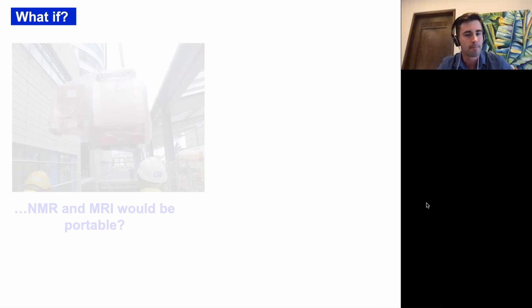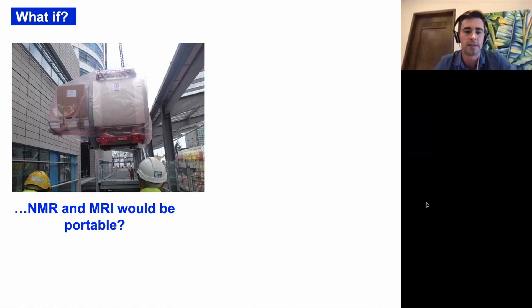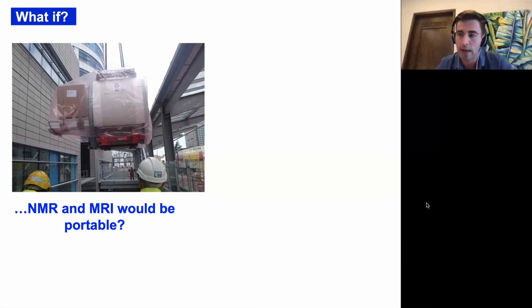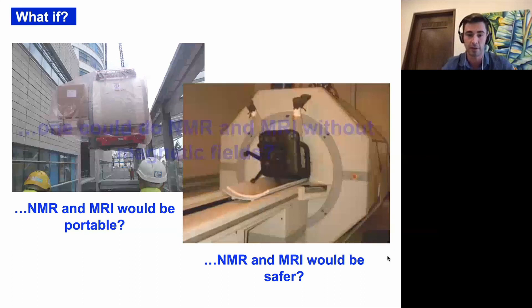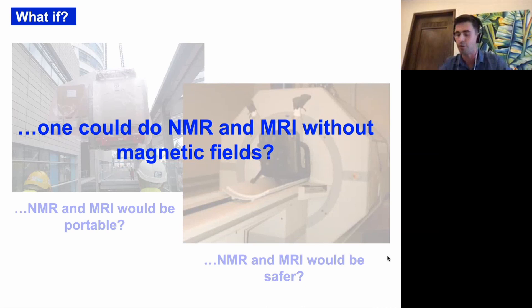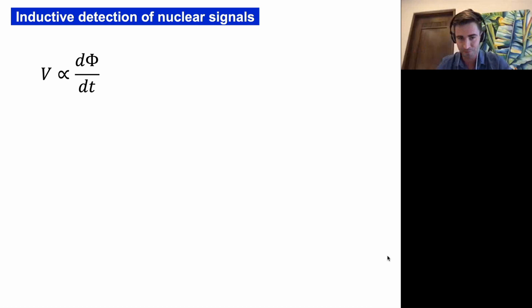I was always fascinated by the field of NMR and MRI, but obviously they have their challenges. One of those problems is portability — usually NMR and MRI scanners are very big and require a lot of infrastructure to put in place. If they were portable, that would open applications in many areas of science and analytical chemistry and bring applications to developing countries. Another challenge is safety. Both problems are related to the strength of the magnetic field, so what if one could do NMR and MRI without magnetic fields?